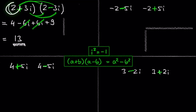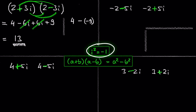So 2 times 2 is 4 minus 3i squared, which is negative 9. Be careful and don't forget the negative sign here. 4 minus negative 9 is 4 plus 9, which is 13. And that's exactly the same result we get when using the FOIL method.